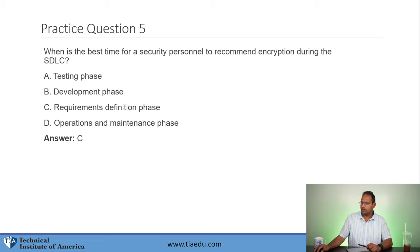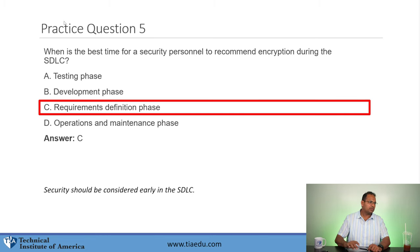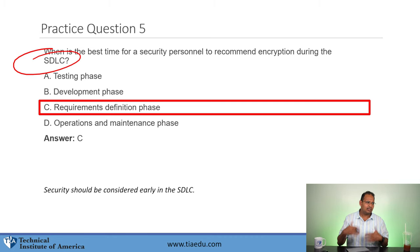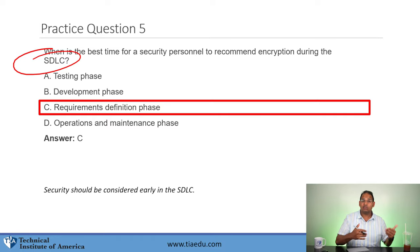A quick CISSP exam tip: if you narrow down to two choices and debate which is better, go with the most generic choice — does A include B, or does B include A? Whichever includes the other is the answer. In the PII question, option D includes A, B, and C — making it the best choice. Question 5: What is the best time for security personnel to recommend encryption during the SDLC — testing, development, requirements definition, or operations and maintenance? The answer is requirements definition — always the earliest phase. Security should be added as early as possible.